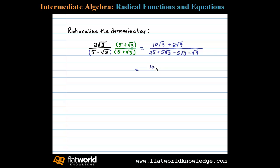Now simplifying here, in the numerator we have 10 square root of 3 plus 2 times 3. In the denominator we can see 5 square root of 3 and negative 5 square root of 3—they add to 0, leaving us with 25 minus 3. And notice at this point there's no more radical in the denominator.